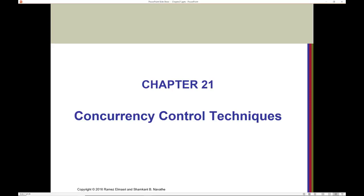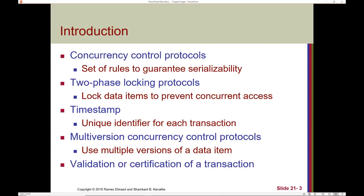Chapter 21: Concurrency Control Techniques. In this chapter we'll talk about concurrency control protocols, introduce two-phase locking protocols, discuss how timestamps can be used for concurrency control, and then briefly discuss multi-version concurrency control protocols.